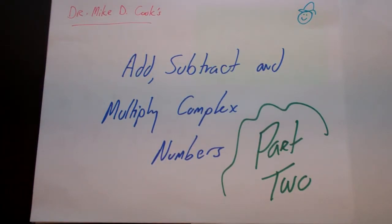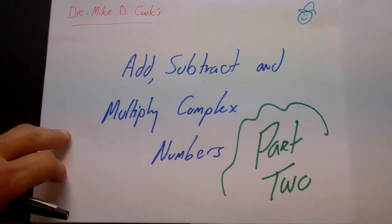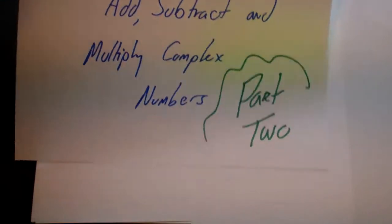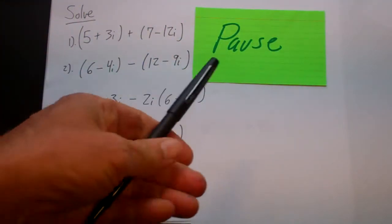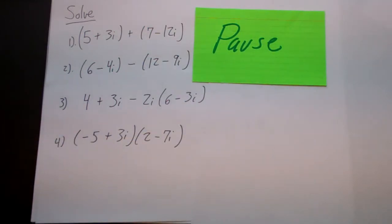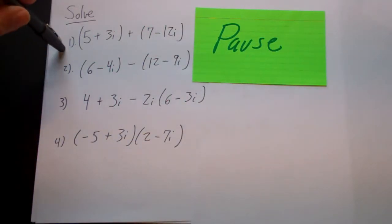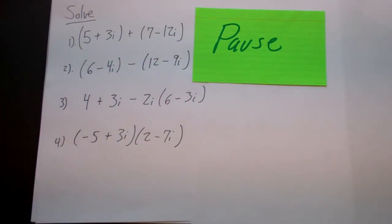This is the second part of the videos on adding, subtracting, and multiplying complex numbers. In this video, what I'd like you to do is to solve these four problems. I'm going to leave these up and ask you to hit the pause button. After you hit the pause button, work through these four problems and then check your answers. So hit the pause button now.